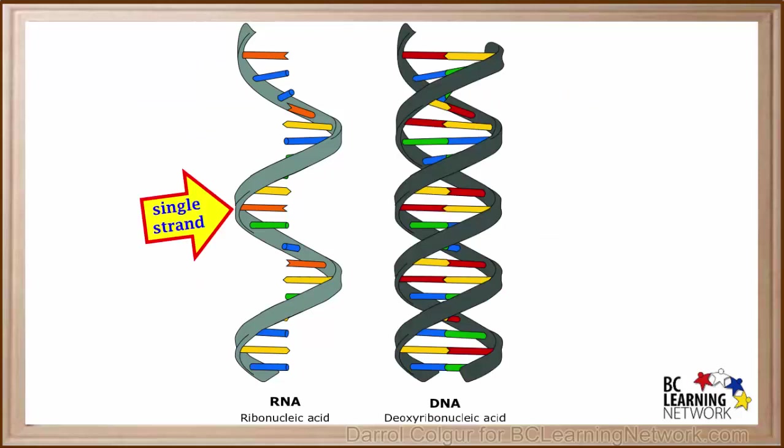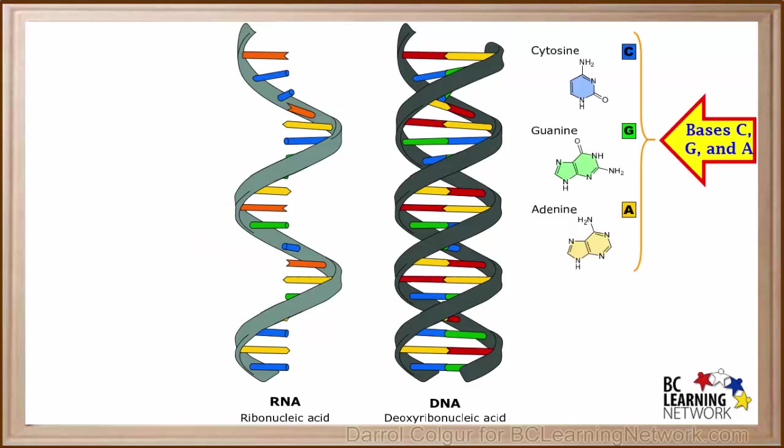Let's summarize the main differences between RNA and DNA. First we see that RNA has only a single strand, whereas DNA has a double strand. Now DNA contains the bases C, G, and A.